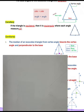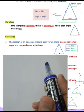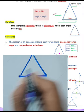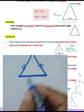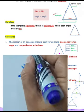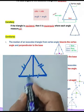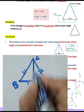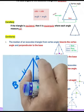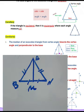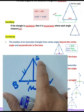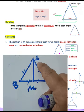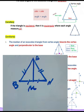The median of an isosceles triangle drawn from the vertex angle bisects the vertex angle and is perpendicular to the base. If we draw the median EM from vertex A to the base BN, it will be perpendicular to BN and will bisect the vertex angle A — doing two things: bisecting the vertex angle and being perpendicular to the base.